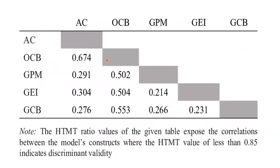Here is our example. These are the constructs: AC, OCB, GPM, GEI, and GCV. You can see all these values are below 0.85. The HTMT ratio values of the given table show the correlation between the model's constructs, where an HTMT value of less than 0.85 indicates discriminant validity. We can say discriminant validity criteria is fulfilled because all the values are less than 0.85.